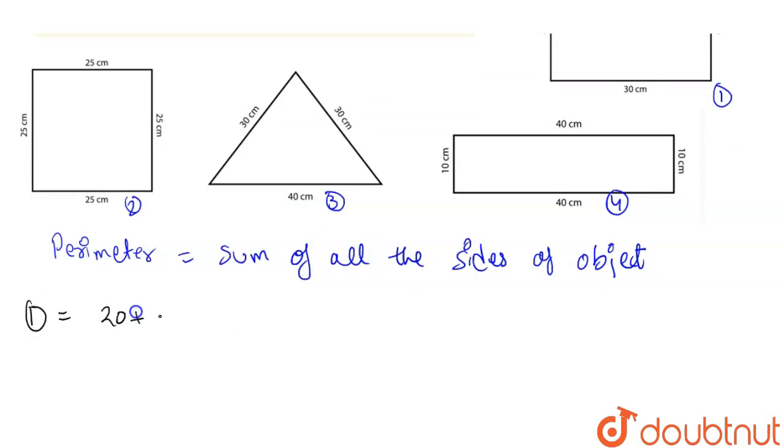20 plus 30 plus 20 plus 30, which equals 40 plus 60, that is 100 centimeter. 100 centimeter is the perimeter for the first figure.